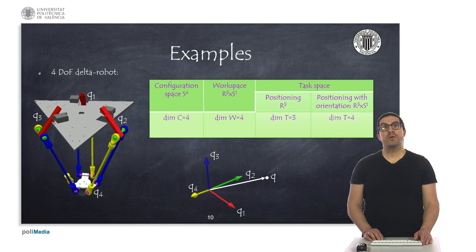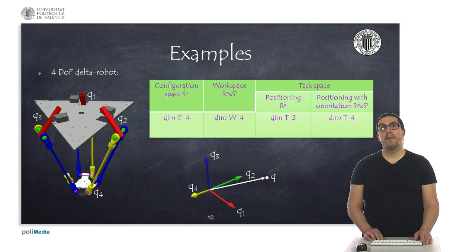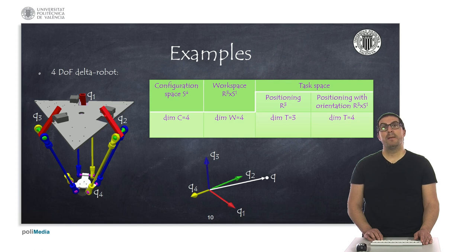Here we show the case of a delta robot with 4 degrees of freedom. The configuration space is a subspace of S4, and therefore the dimension of the generalized coordinate vector is 4. In this case, all variables correspond to angular variables — the angles of the joints. The workspace is exactly the same as we have seen in the SCARA robot, despite the fact that the configuration space is different.